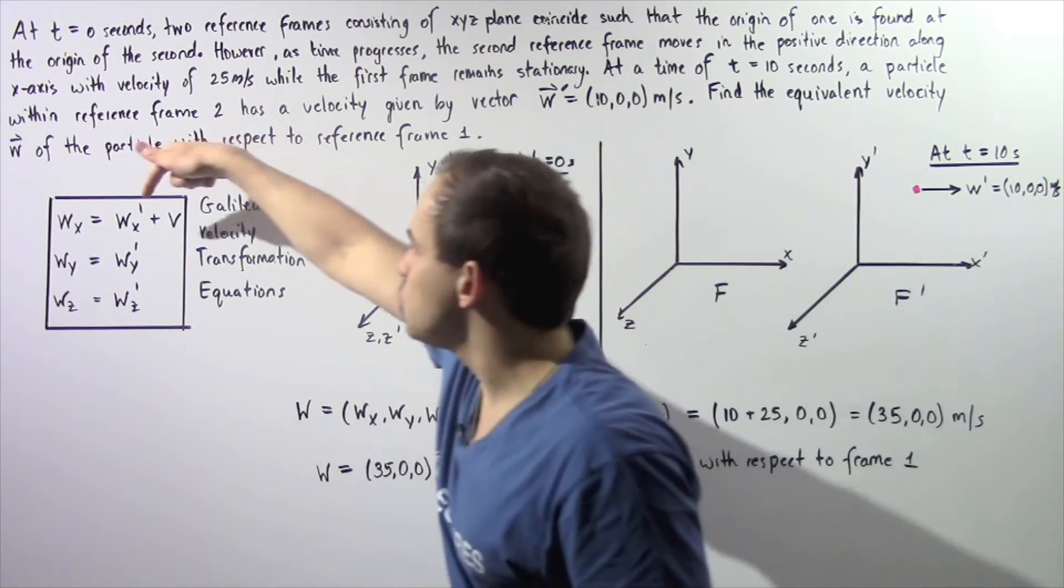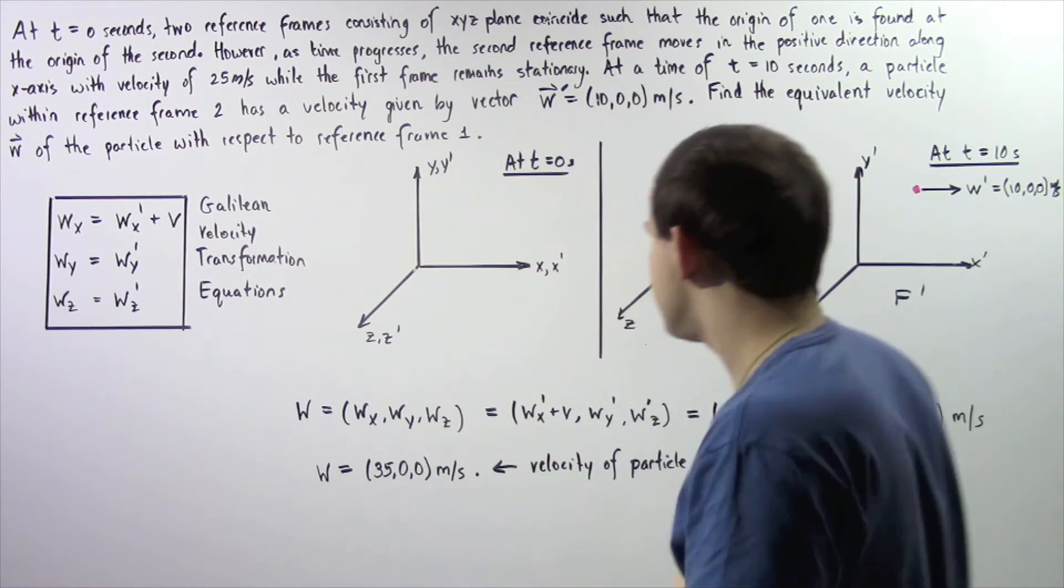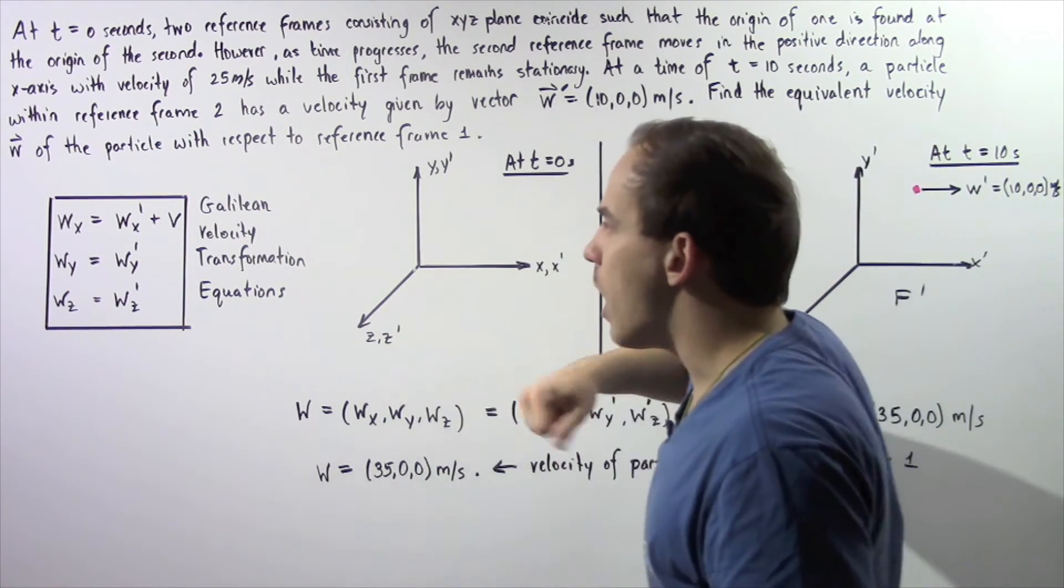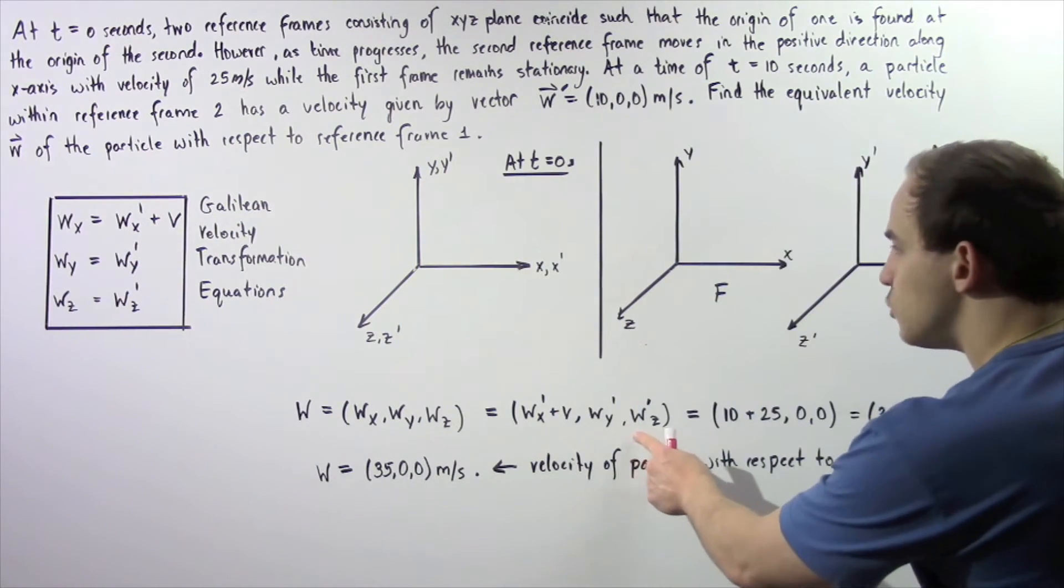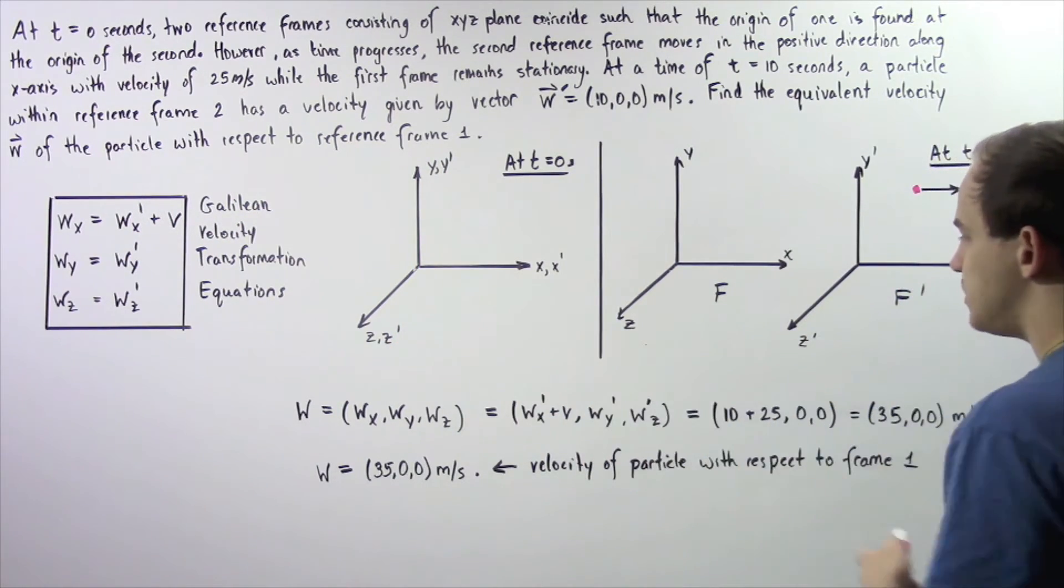So w_x is equal to w_x prime plus v, w_y is equal to w_y prime, and w_z is equal to w_z prime.